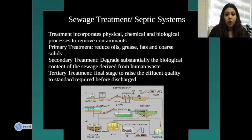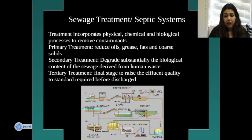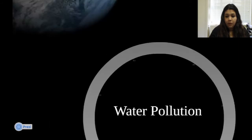There is also sewage treatment using septic systems, incorporating physical, chemical, and biological processes. Primary treatment reduces oils, grease, fats, and coarse solids. Secondary treatment degrades substantially the biological content of sewage derived from human waste. Tertiary treatment is the final stage, raising effluent quality to the standard required before discharge. Each stage progressively reduces contaminants.